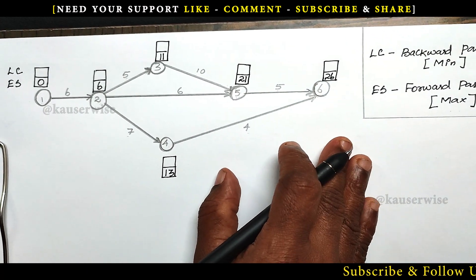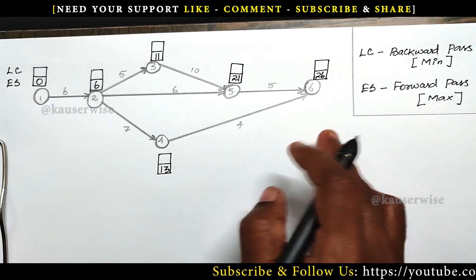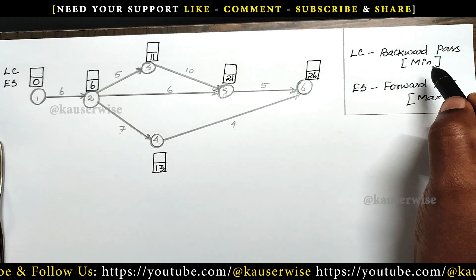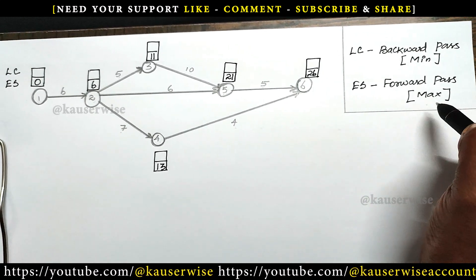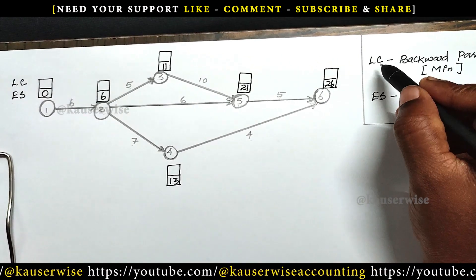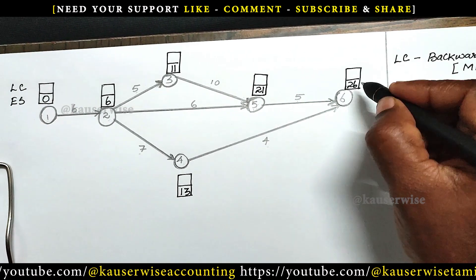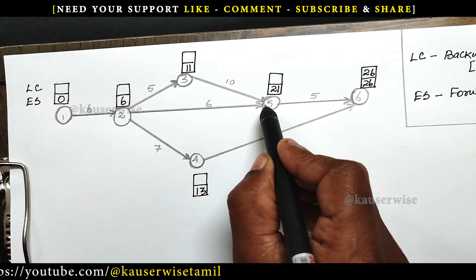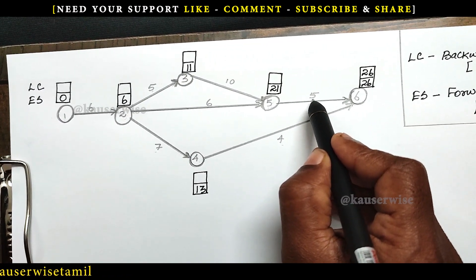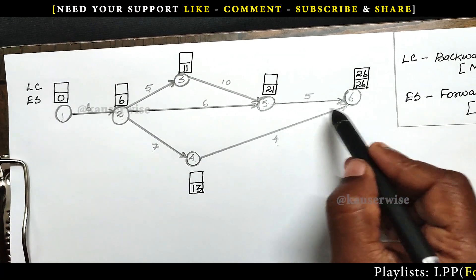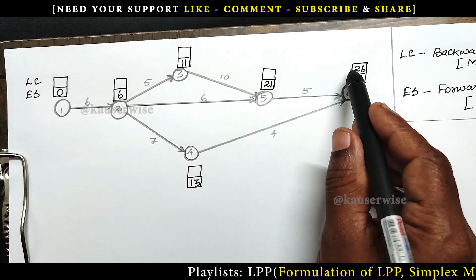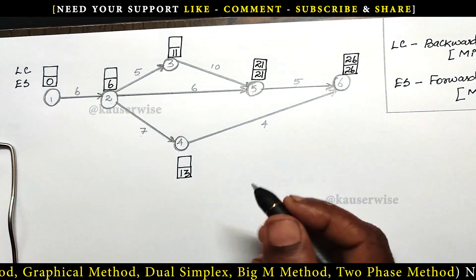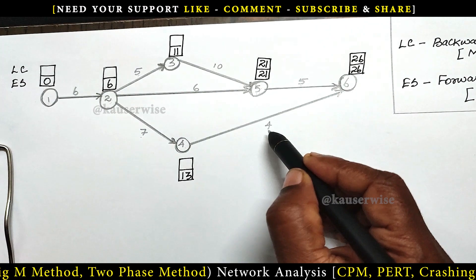That's all — this is the way to calculate earliest start time for each and every node. Now we need to calculate latest completion time. For that, we need to apply backward pass. If you have more than one option, we need to select the minimum one — instead of maximum, we select minimum duration. We need to start from the last node. Enter the same duration as the latest completion time: 26. Now for node 5: 26 minus 5 equals 21. We need to subtract for latest completion time. For node 4: 26 minus 4 equals 22.